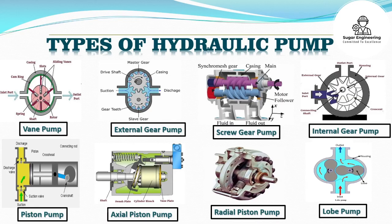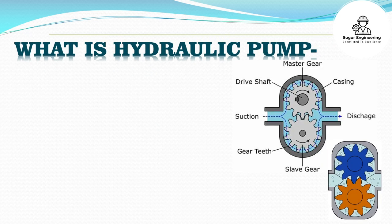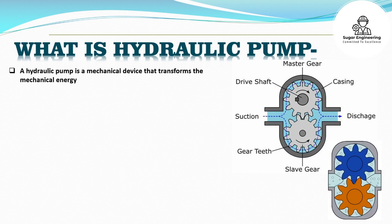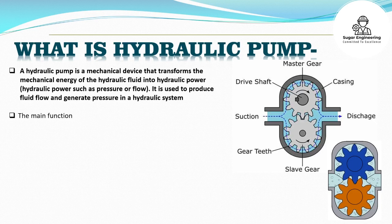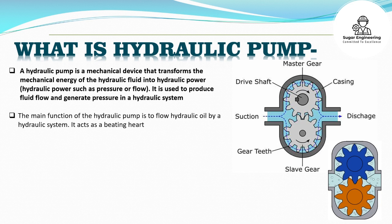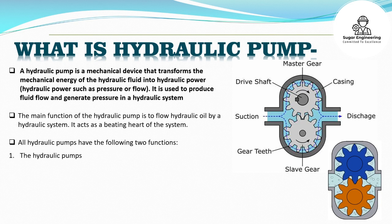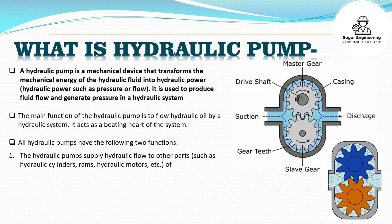A hydraulic pump is a mechanical device that transforms the mechanical energy of the hydraulic fluid into hydraulic power, such as pressure or flow. It is used to produce fluid flow and generate pressure in a hydraulic system. The main function of the hydraulic pump is to flow hydraulic oil through a hydraulic system. It acts as a beating heart of the system.